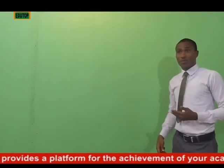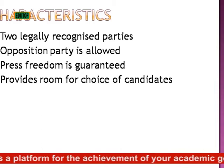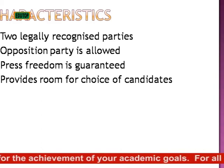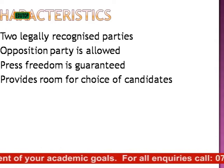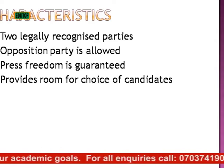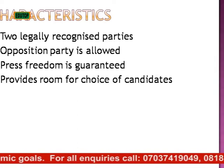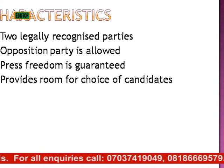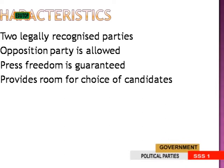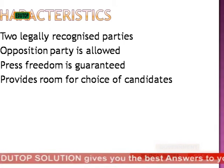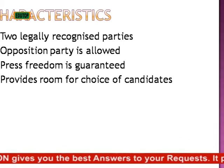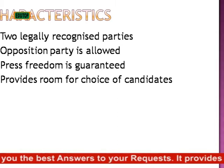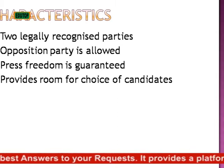Now for the two-party system — one characteristic is two legally recognized parties. In a system where you have two political parties recognized, such a system is referred to as a two-party system. The next characteristic is that an opposition party is allowed. The second party that is not in power could form the opposition to the party that is in power.